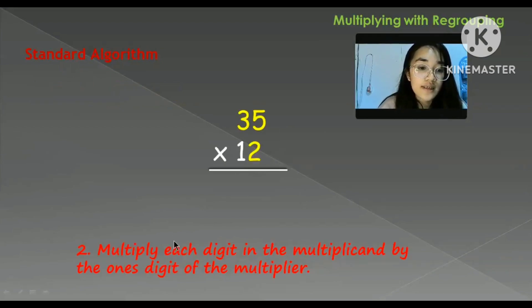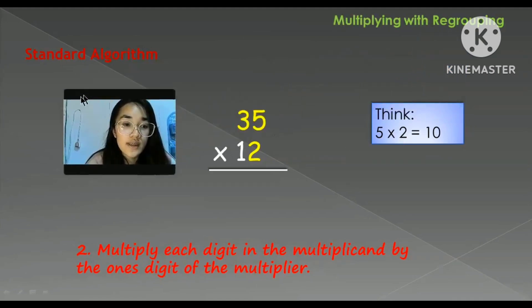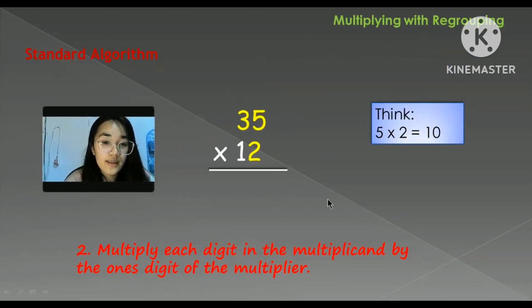So second, multiply each digit in the multiplicand, which is 35, by the ones digit of the multiplier. So let's start: 5 times 2 is equal to 10, and we need to regroup 1 here.